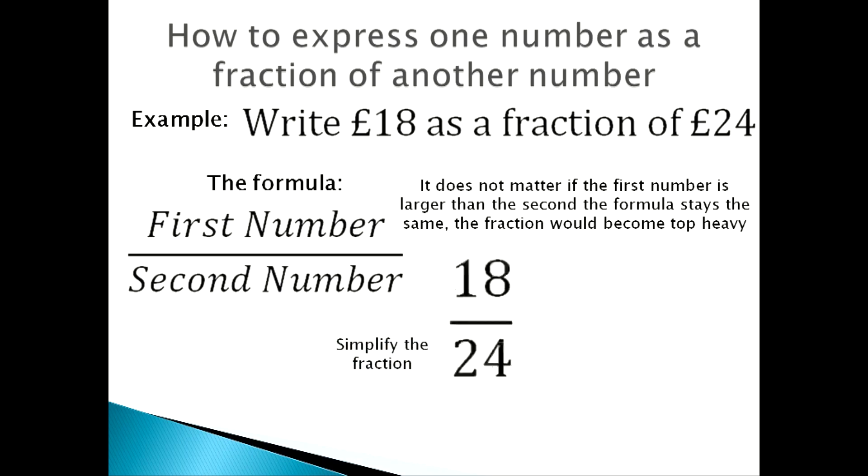So this is what the fraction would look like: 18 over 24. You simplify the fraction and you'll get 3 over 4, which means that 18 pounds is 3 quarters of 24 pounds.